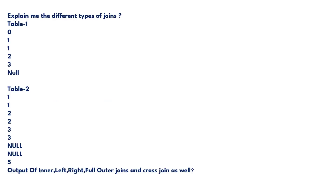A very important question — whether in ETL testing or data engineering — is to explain the different types of joins. This question tests your SQL knowledge, and some interviewers will cut the call in the first five minutes if you can't answer it. The standard types are inner join, left outer join, right outer join, full outer join, and cross join. They also provided sample data with two tables to illustrate the results, which I've already answered in my SQL interview questions video.